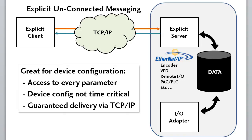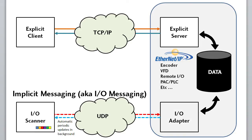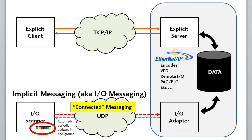You would then typically use implicit connected messaging to actually monitor the device once it is running, because connected messaging provides periodic updates and requires no effort on your part to get the data. It just appears at your local controller.